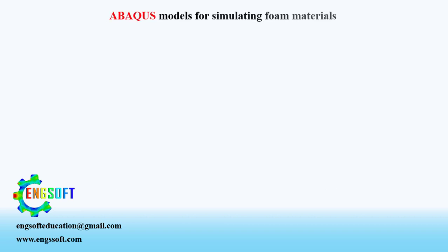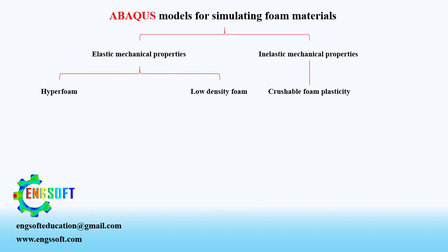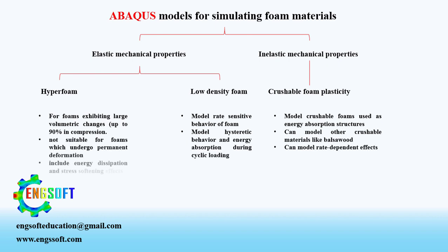Now let's dive into Abacus' built-in material properties for foams. There are two types of model in the elastic mechanical properties branch of the material library of Abacus, named hyperfoam and low-density foam. There is also a model in the inelastic mechanical properties section, named crushable foam plasticity. Each of them has unique features and tips that need to be considered while using them.